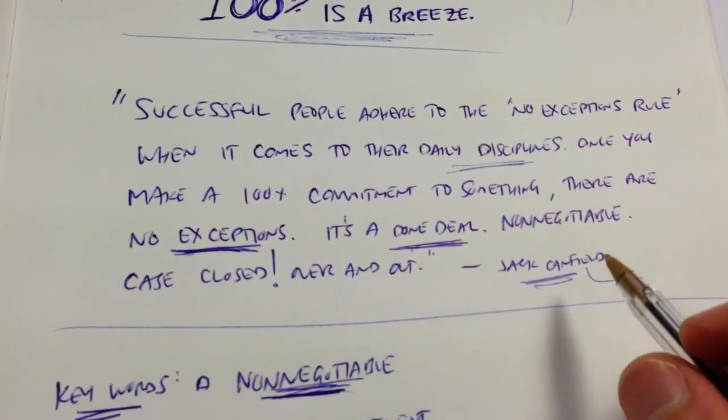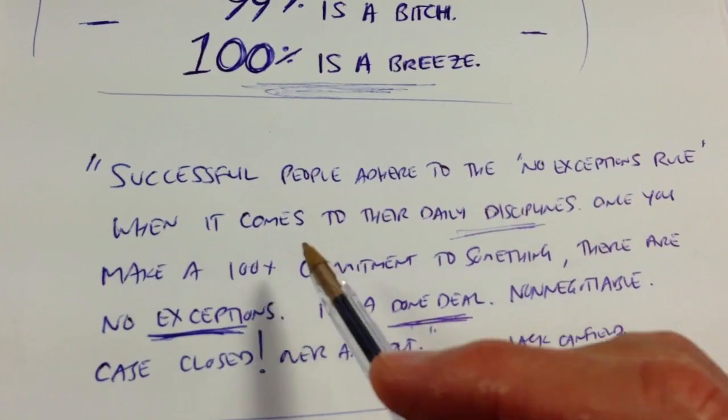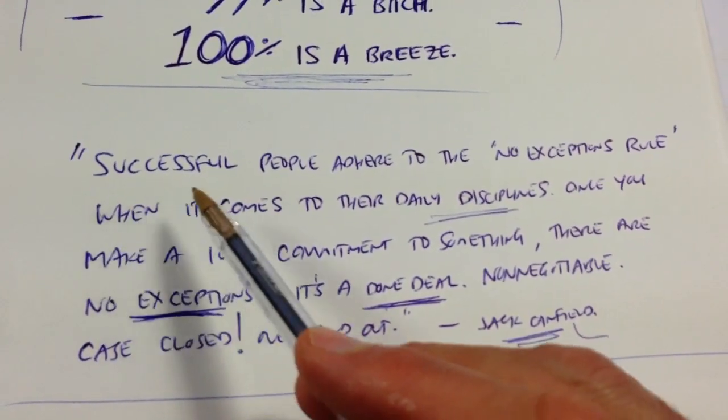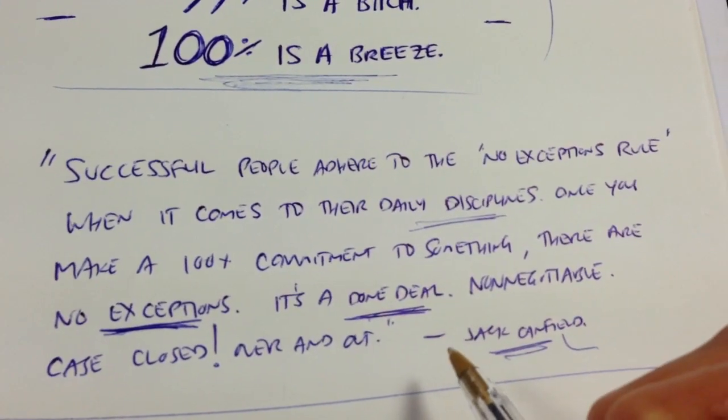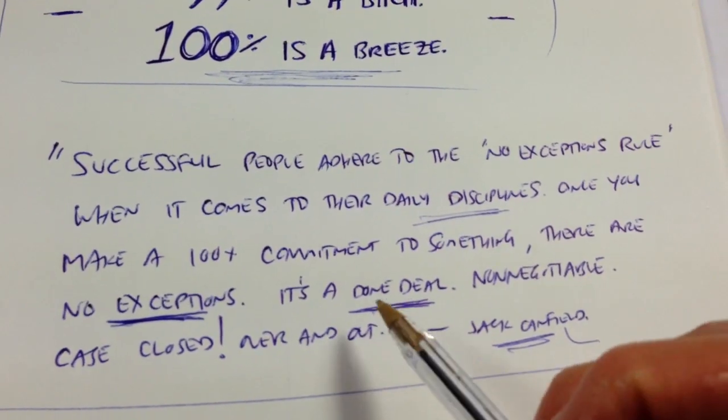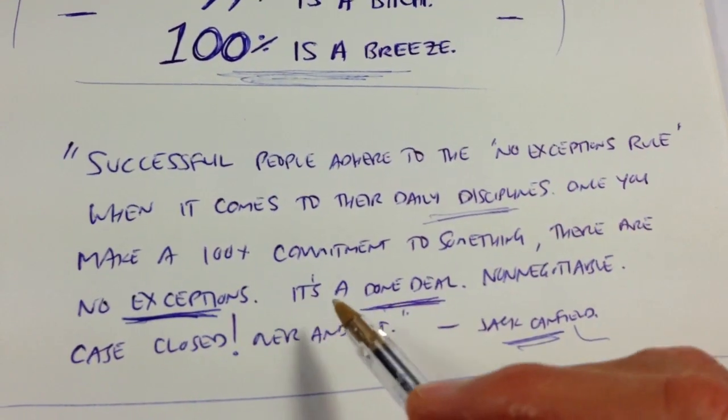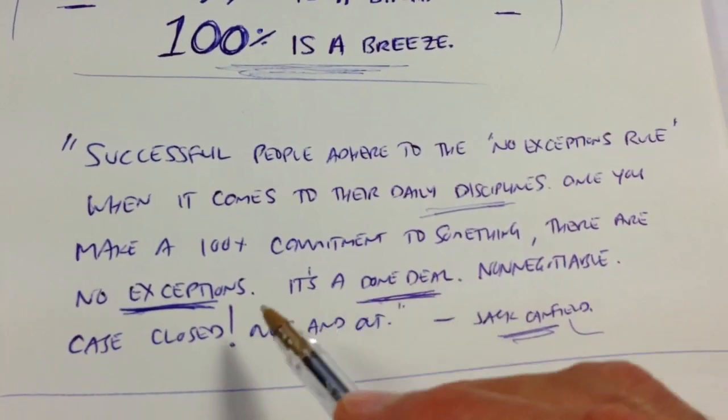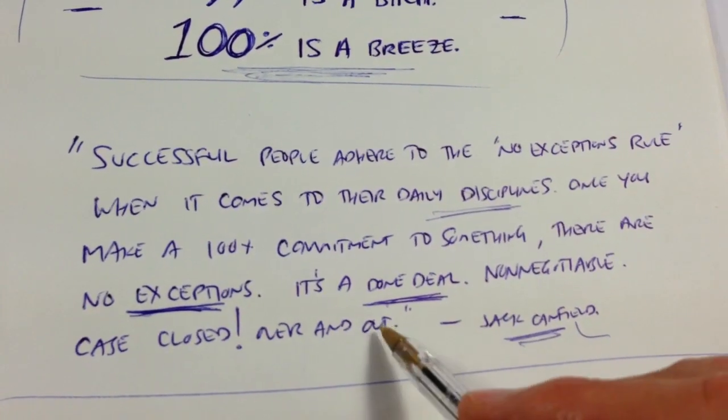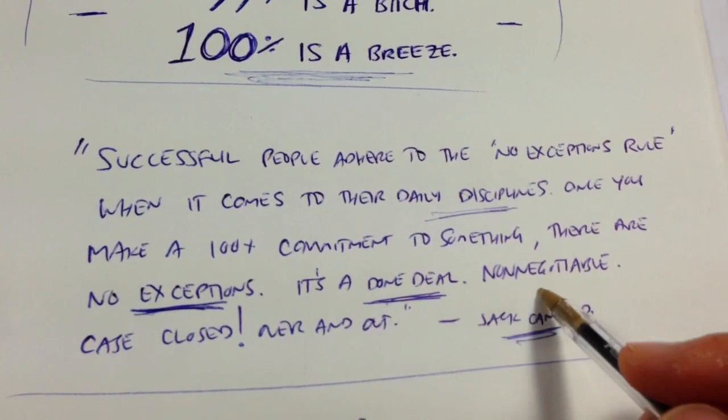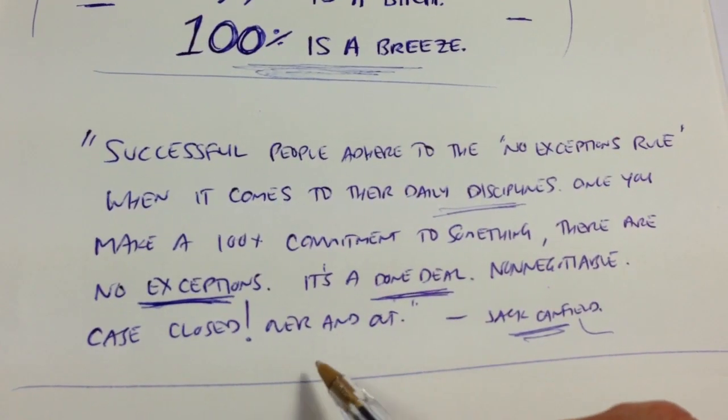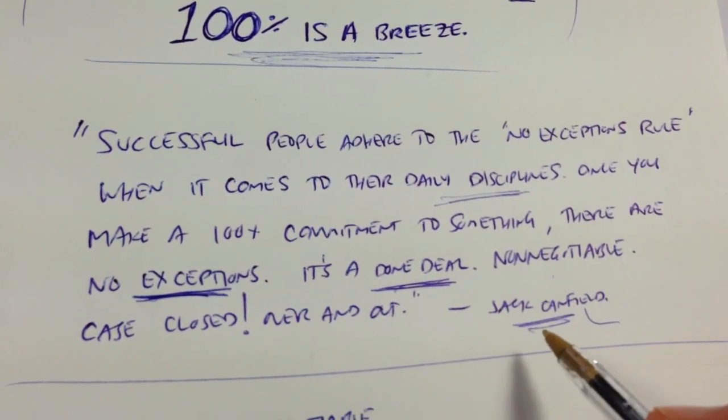Jack Canfield from his Success Principles tells us this: Successful people adhere to the no exceptions rule when it comes to their daily disciplines. Once you make a 100% commitment to something, there are no exceptions. It's a done deal. Non-negotiable. Case closed. Over and out. Thank you, Jack.